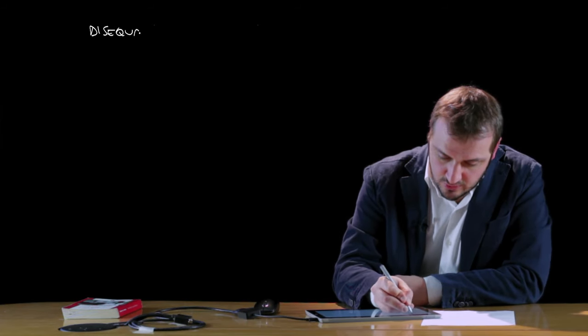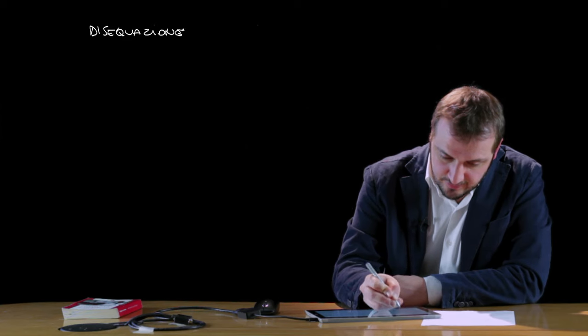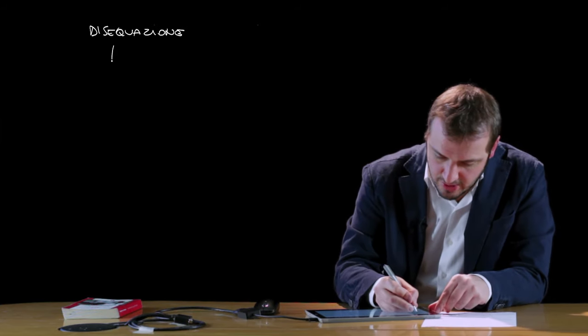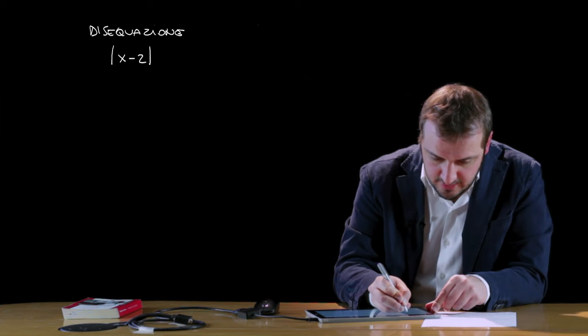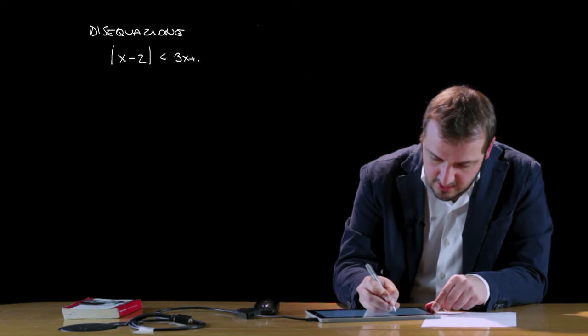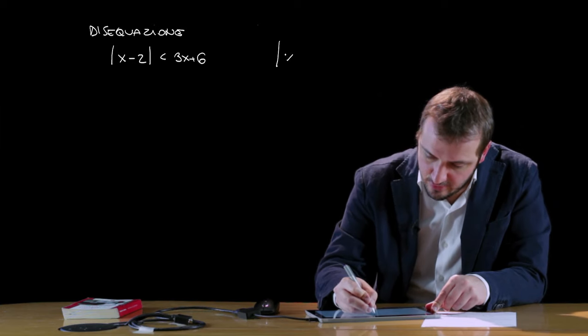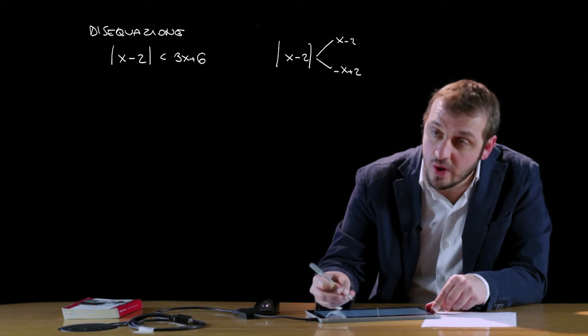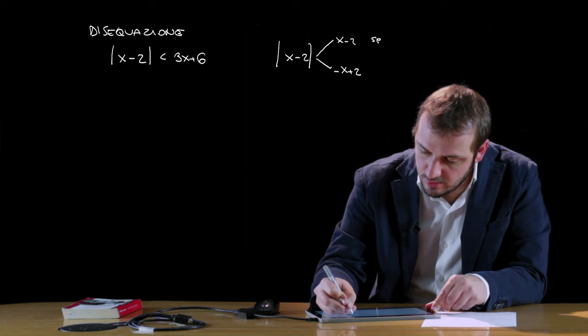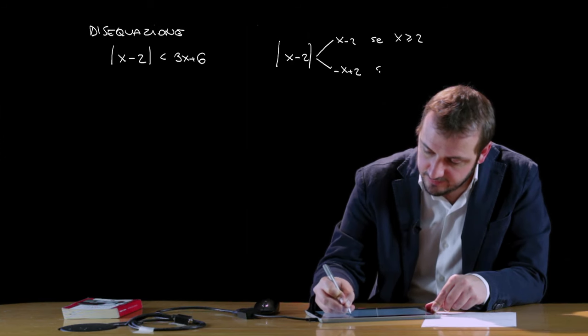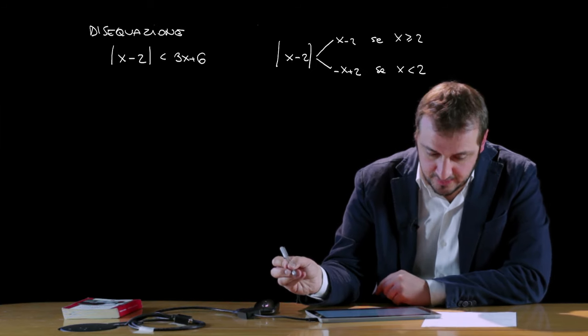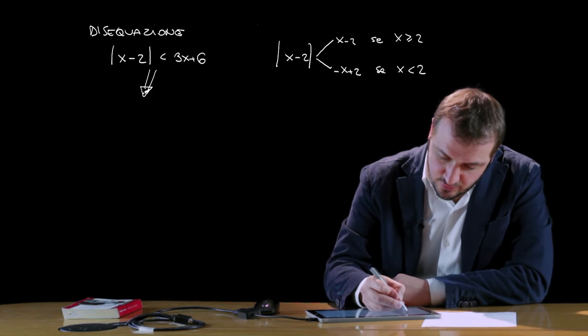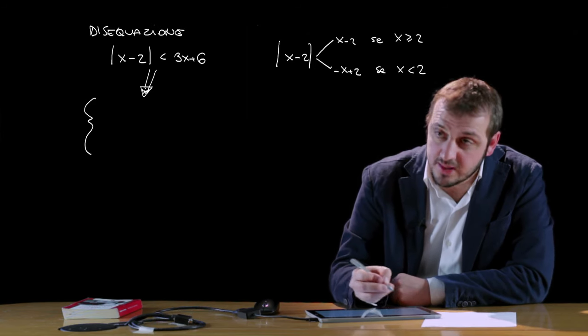Vediamo analogamente il concetto, quindi l'applicazione di una disequazione contenente il valore assoluto. Si ragiona esattamente allo stesso modo: dobbiamo eliminare il valore assoluto tenendo conto del suo segno. Facciamo un esempio: |x-2| < 3x+6. Il modulo di x-2 può restituirci x-2 o meno x più 2 a seconda del segno del suo argomento, quindi x-2 se x è maggiore o uguale di 2, e -x+2 se x è invece minore di 2. Questa disequazione si trasformerà quindi in due sistemi, come abbiamo visto anche per le equazioni.